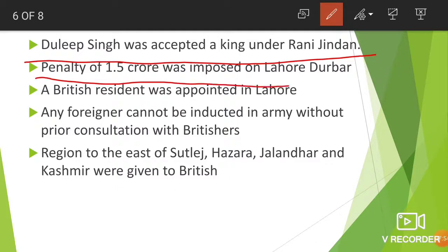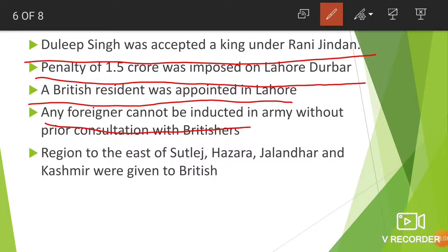A penalty of 1.5 crore was imposed on the Lahore Darbar. A British resident was appointed in Lahore. Any foreigner could not be inducted into the army without prior consultation with the Britishers. After this war, the Sikh Empire was not free to induct foreigners into its army; they had to consult with the Britishers first.